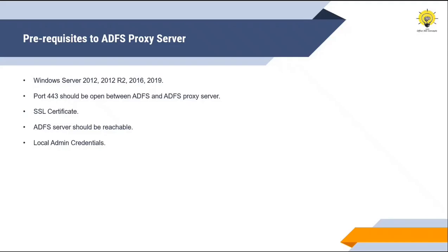Now let's talk about the prerequisites that need to be met before we deploy ADFS proxy server. You can install ADFS proxy service on Windows Server 2012, 2012 R2, 2016, and 2019. Port 443 should be opened between the ADFS server and the machine on which you are going to install ADFS proxy service. You need an SSL certificate to install ADFS proxy service. You can use the same SSL certificate that you are already using on the ADFS servers. ADFS server should be reachable from the machine on which you are planning to deploy ADFS proxy service, and you would require local administrator credentials of the server.